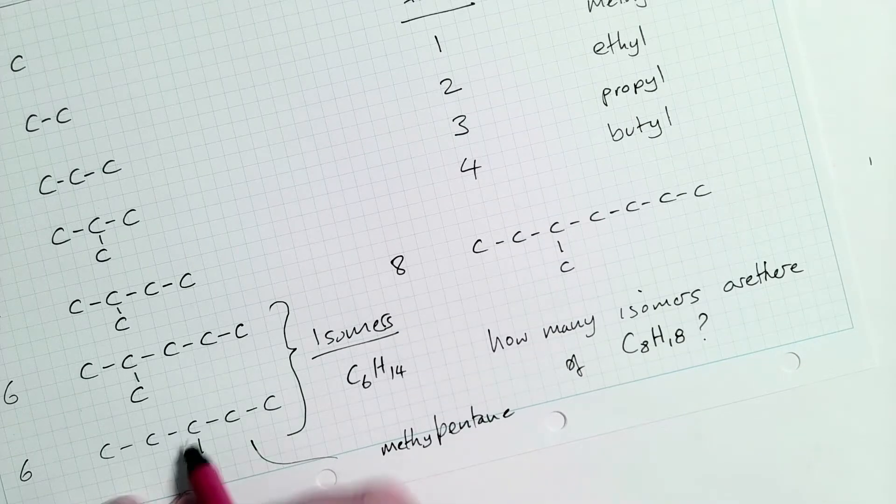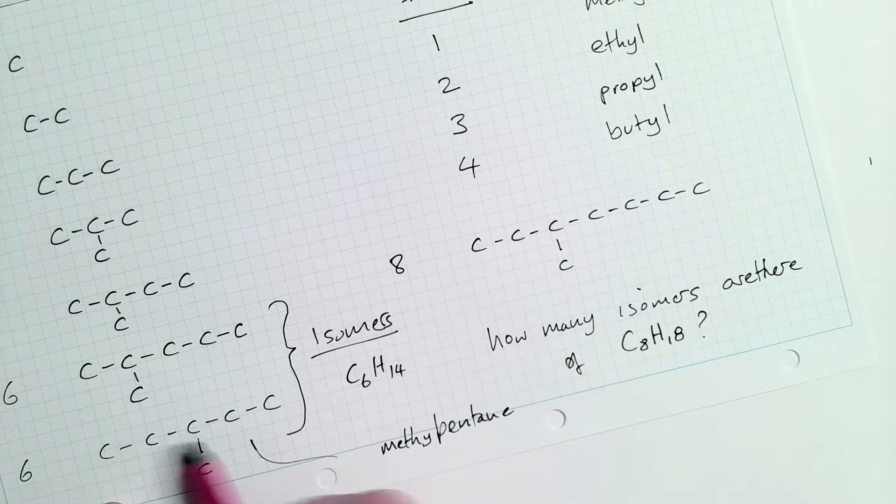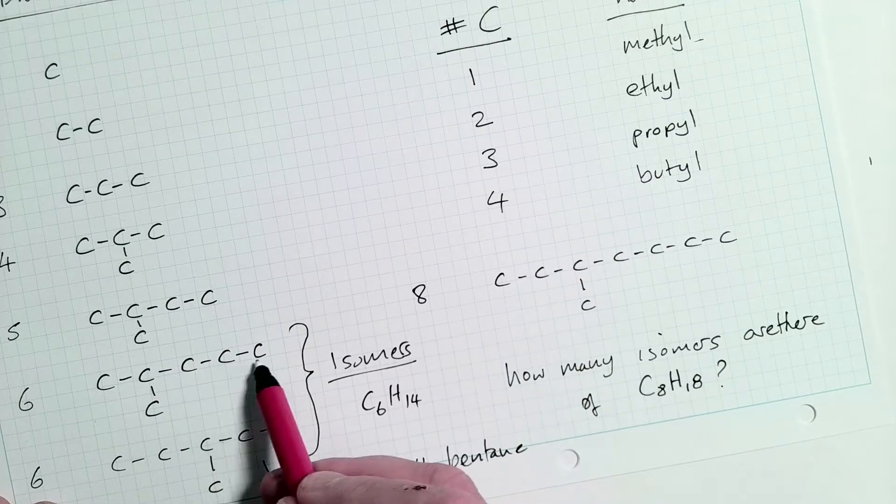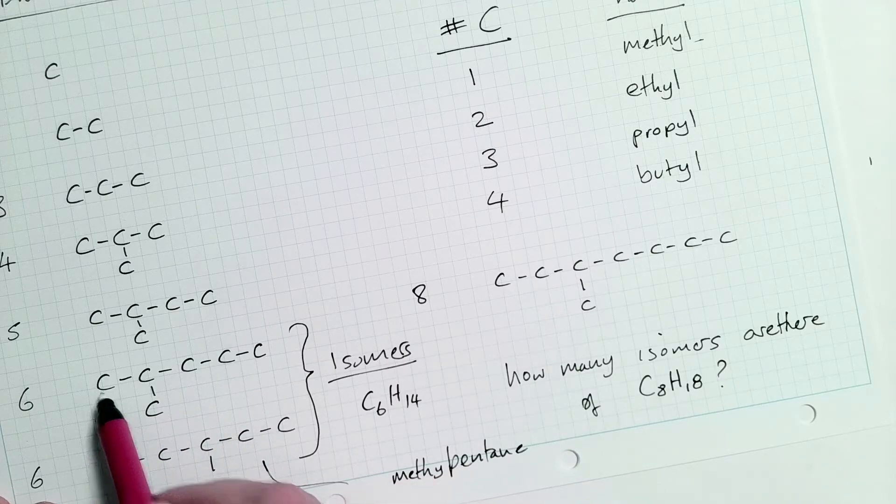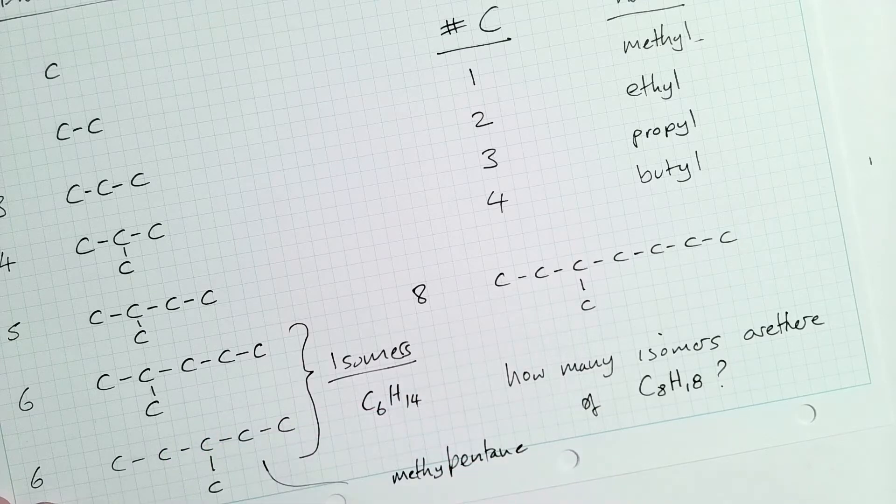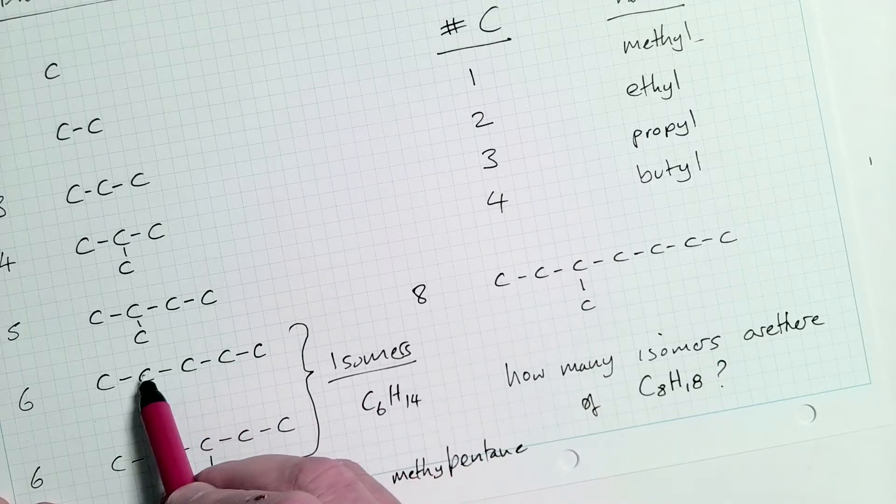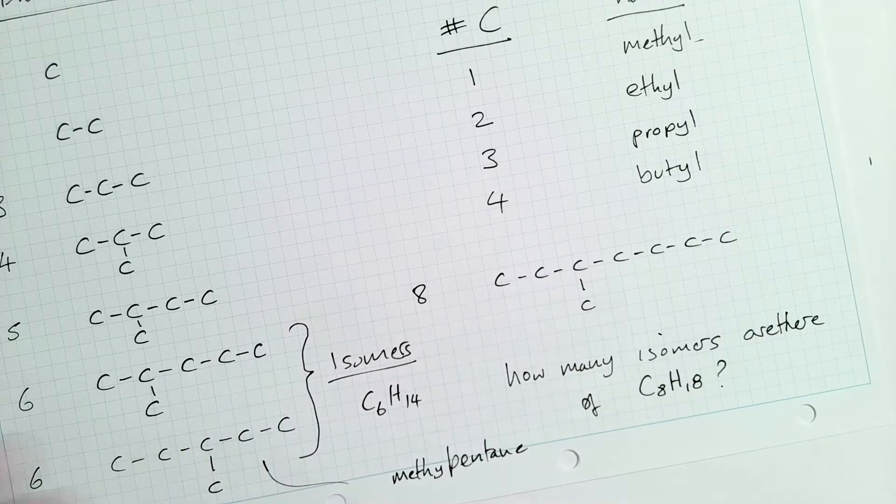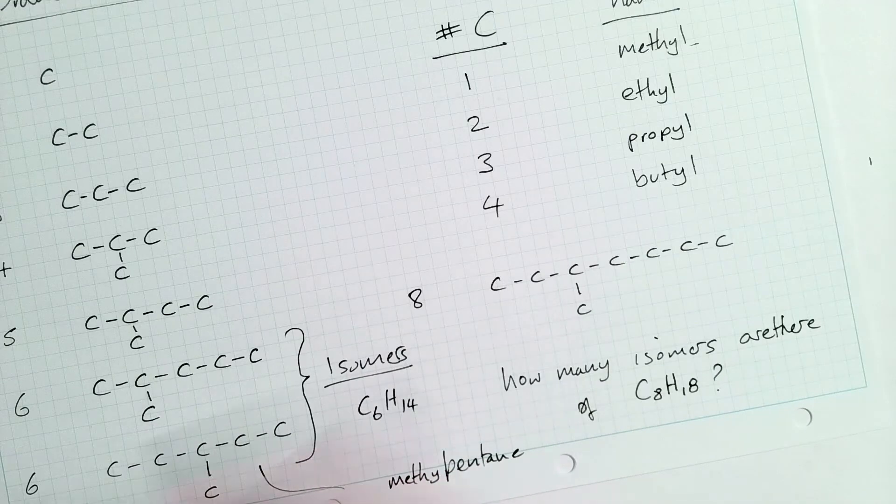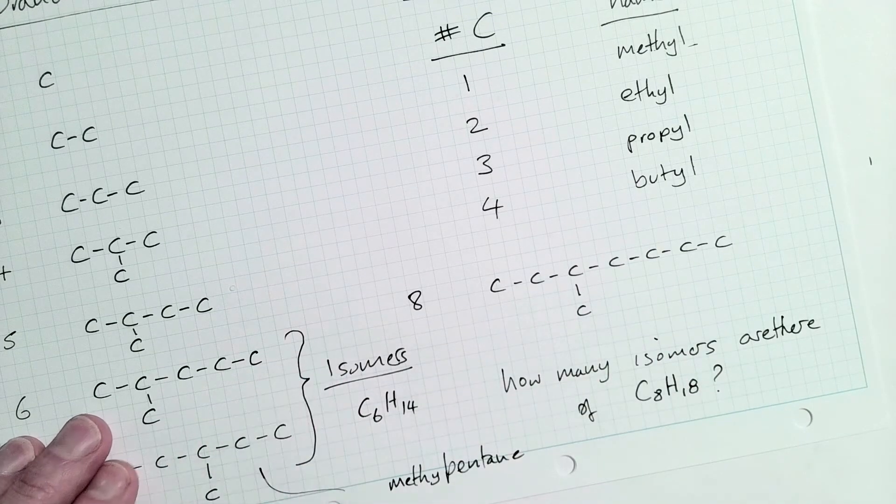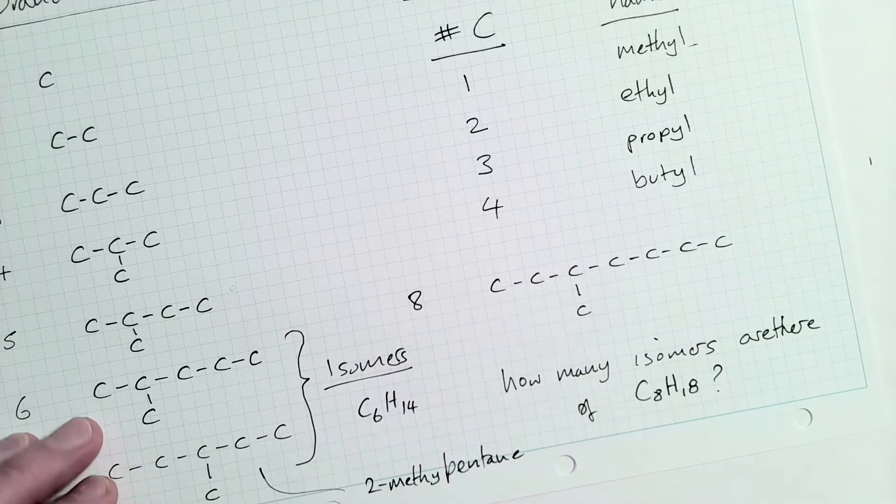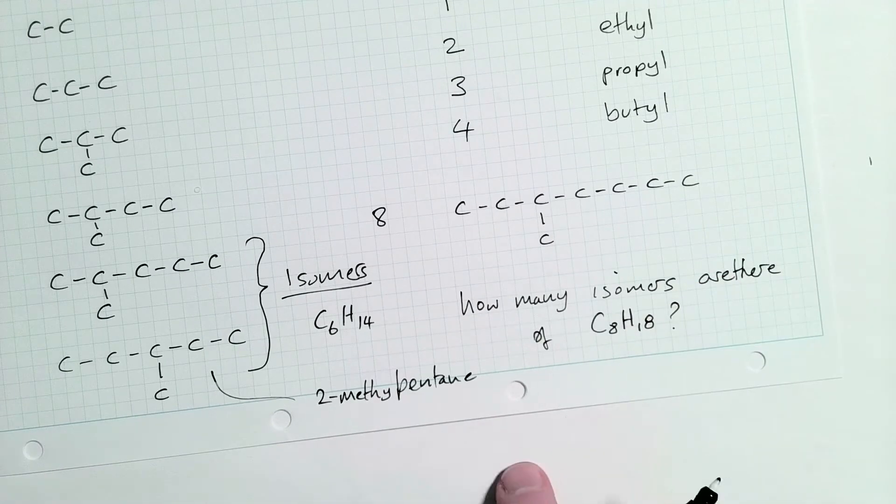And what I'm going to do is I'm going to number the carbons from one end, and I'll use the smallest number I can get. So for example, this one here, I can number from this end, I get one, two. So that carbon is carbon number two. So the methyl is attached to carbon number two, or I could number it from the other end. One, two, three, four. The carbon would be four methyl pentane, but no, we don't do that. We use the smallest number we can. So it's going to be two. So that one up there is two methyl pentane.